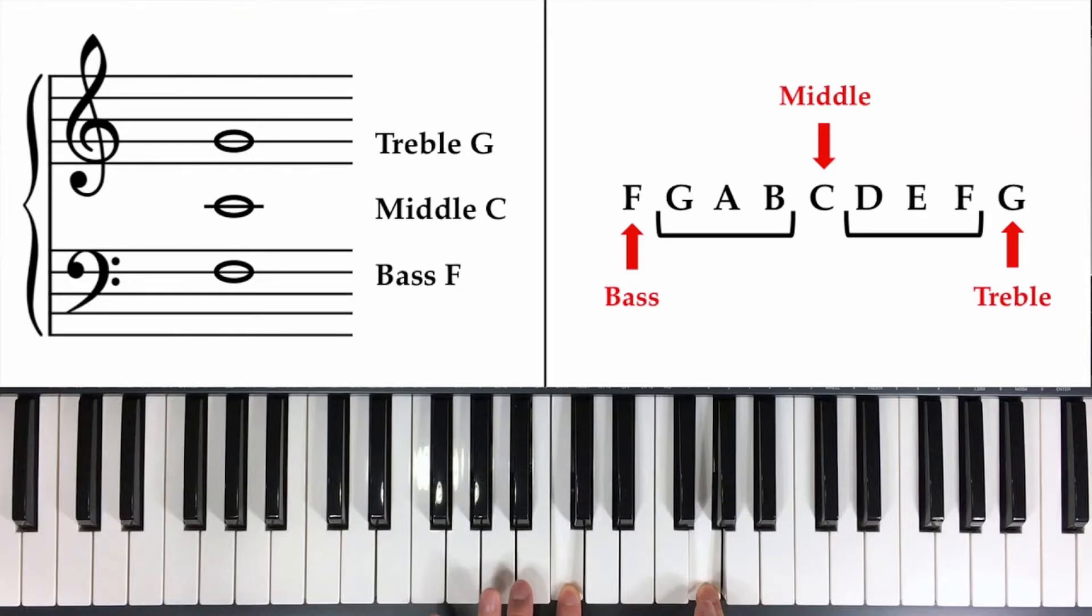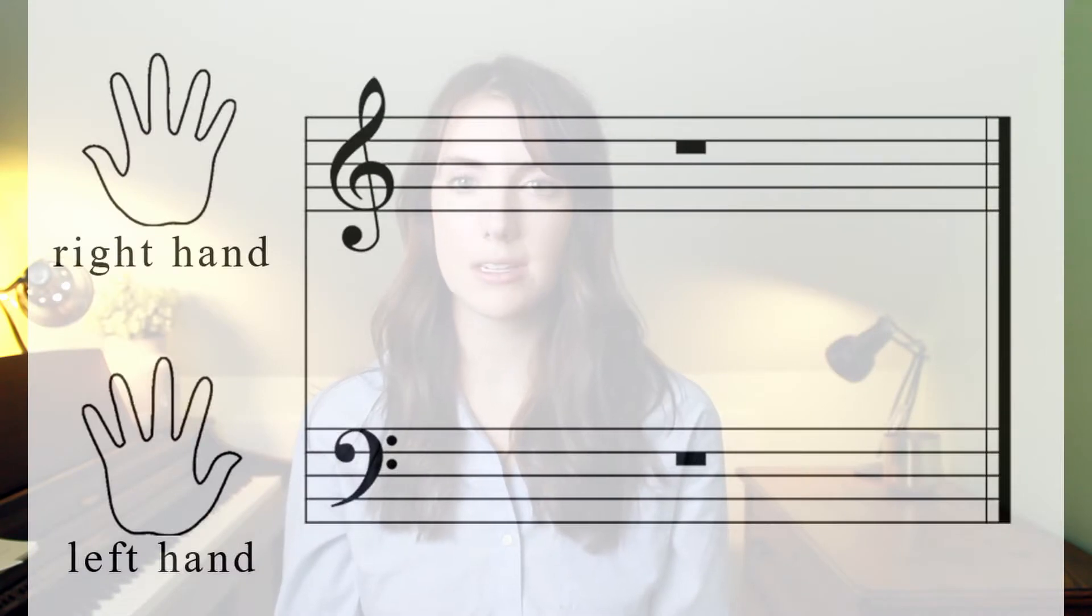So the most common landmark notes are middle C, the G in the treble clef, and the F in the bass clef. The treble clef is the clef for the right hand and the bass clef is the clef for the left hand. And these are our three most common landmark notes.